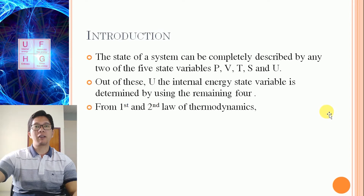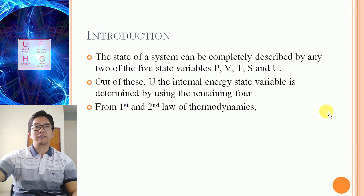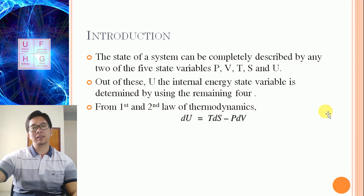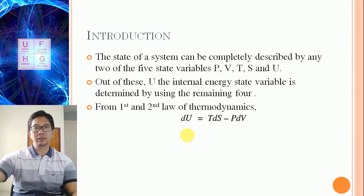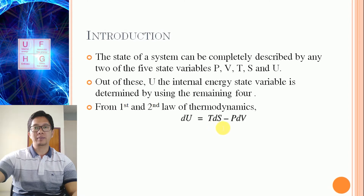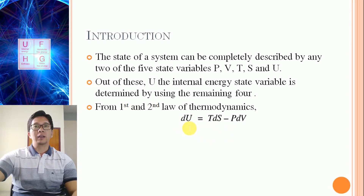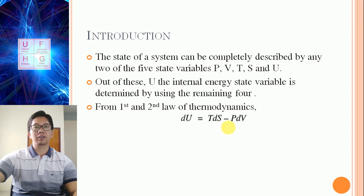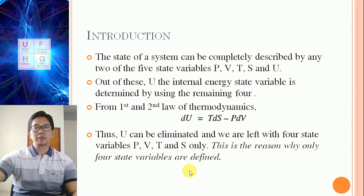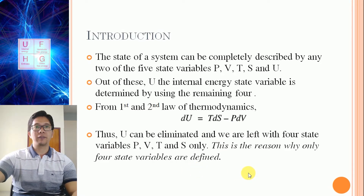From the first and second law of thermodynamics, we have DU equal to TDS minus PDV — change in internal energy equal to temperature into change in entropy minus pressure into change in volume. So internal energy can be determined by using the remaining four variables: pressure, volume, temperature, and entropy. This is the reason why only four state variables are defined.